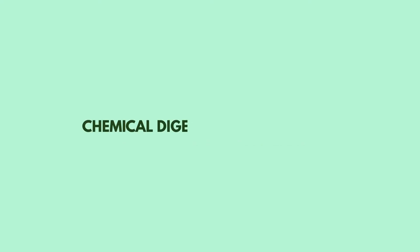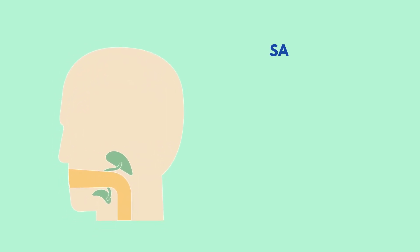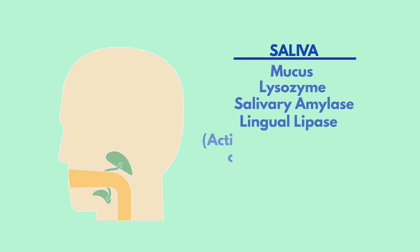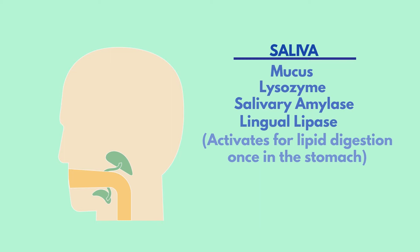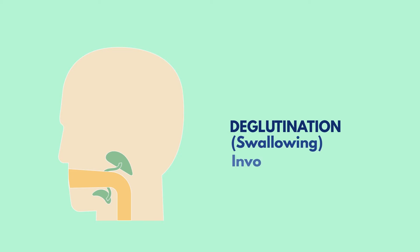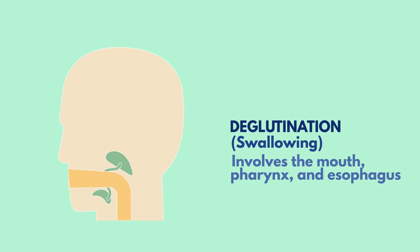In addition to the mechanical digestive process of mastication, chemical digestion begins in the mouth as well. This involves saliva, secreted into the mouth by various salivary glands. In the saliva there is mucus, which lubricates the food bolus to make it easier to swallow, lysozyme to kill any potential bacteria in food, salivary amylase which begins the chemical digestion of starches into smaller polysaccharides, and lingual lipase, which is inactivated at this point but will begin lipid digestion once in the stomach. What comes next is deglutition, or swallowing, involving the mouth, pharynx, and esophagus, all of which work together to transport the food into the stomach.